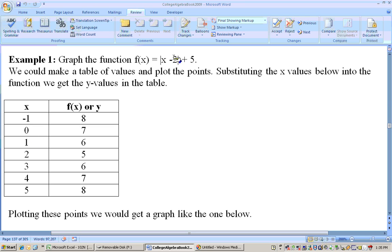Put 0 in. 0 minus 2 is minus 2. Absolute value of negative 2 is 2. I feel like I'm an auctioneer here. 2 plus 5 is 7. Let's do another one. Put 1 in. 1 minus 2 is negative 1. Absolute value of negative 1 is 1. 1 plus 5 is 6. You get the idea. Just keep on plugging them in here.